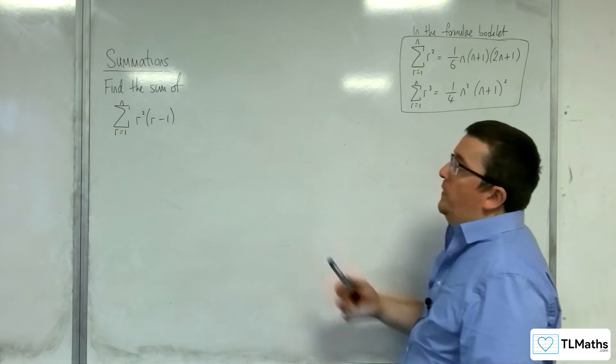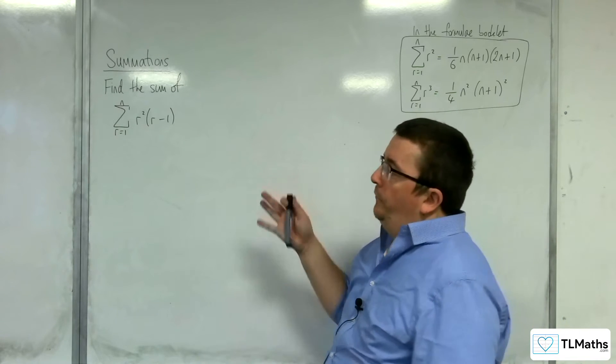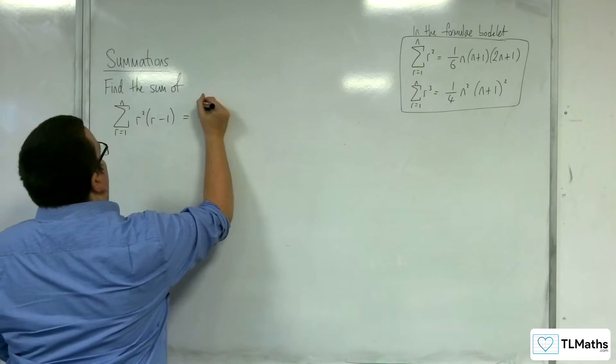In this example, we want to find the sum from r is 1 to n of r squared times r minus 1. First job is to expand those brackets out. Don't leave them like that.